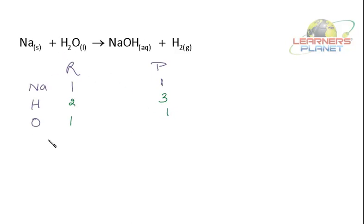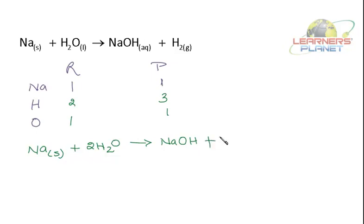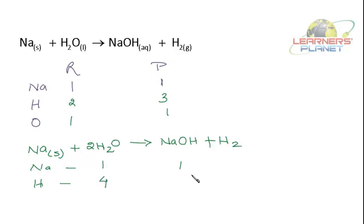If I put a 2 in front of H₂O, let's see what I'll get: Na solid plus 2H₂O is giving NaOH plus H₂. Is this balanced now? Sodium on the reactant side is 1, product side is 1. Hydrogen on the reactant side has become 4. Hydrogen on the product side is 3. Oxygen on the reactant side has become 2, and oxygen on the product side is 1 only.